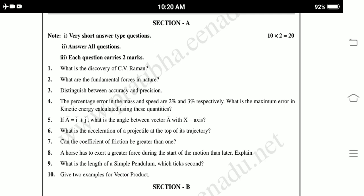Fourth question: The percentage error in the mass and speed are 2% and 3% respectively. What is the maximum error in kinetic energy calculated using these quantities? Fifth question: If A bar equals I bar plus J bar, what is the angle between A bar with X axis?